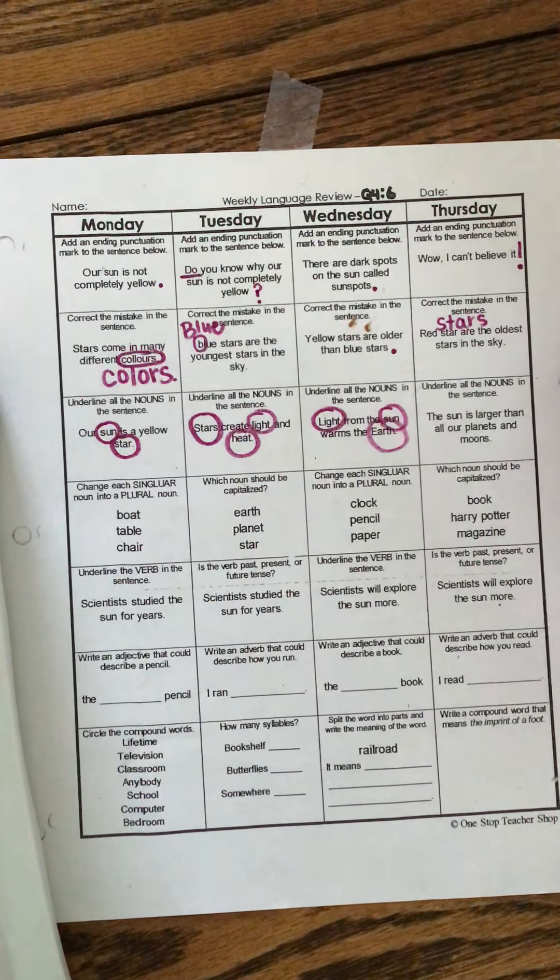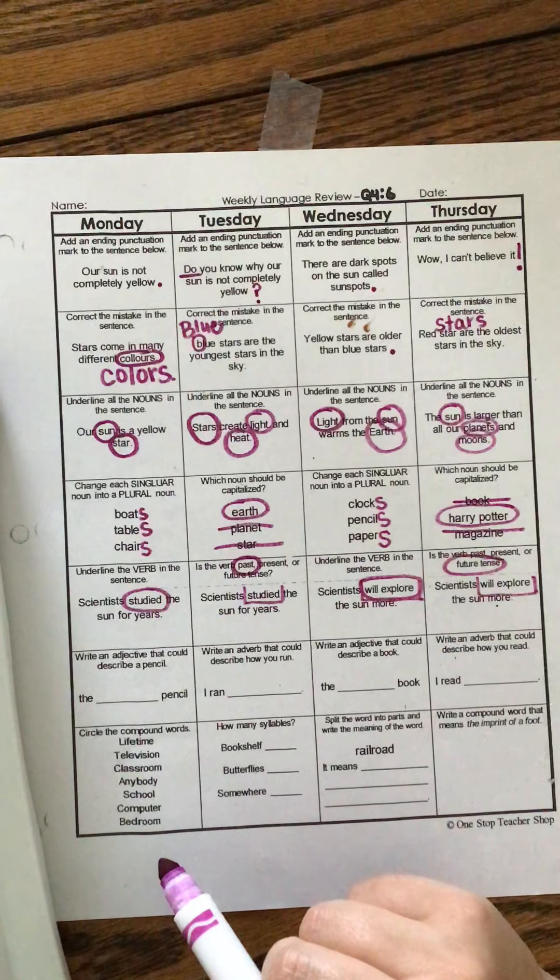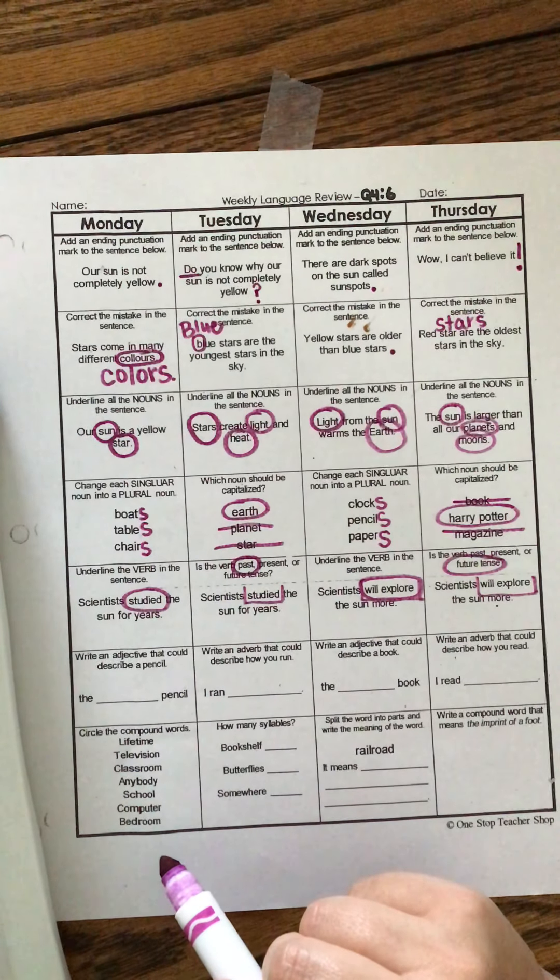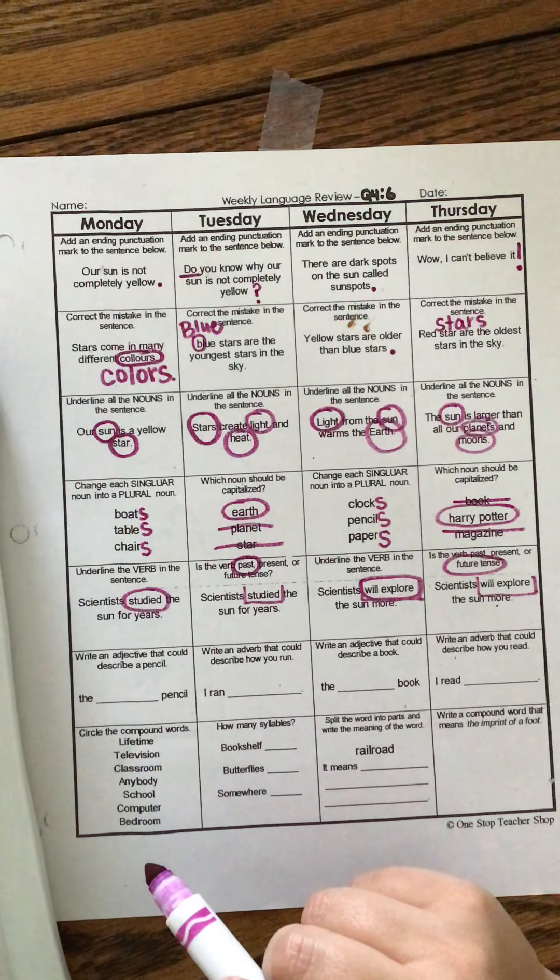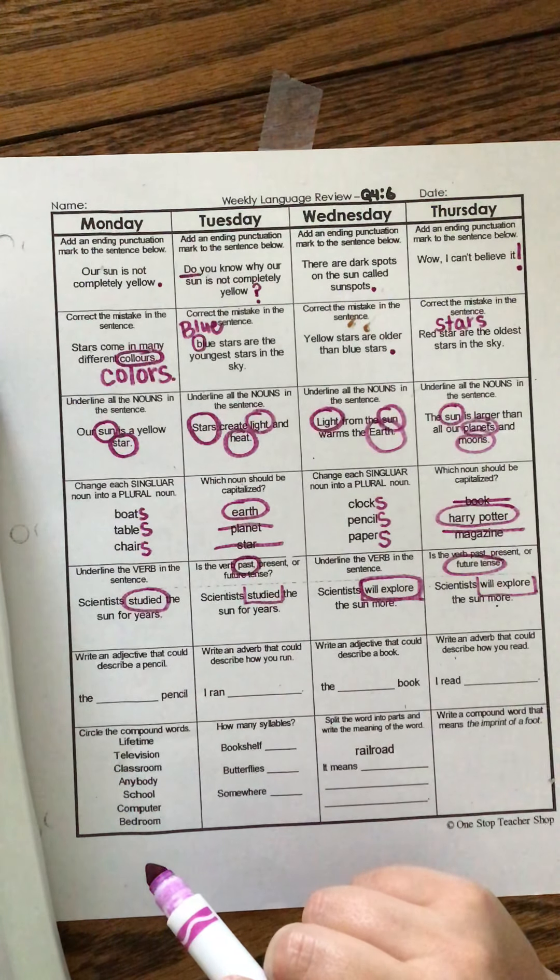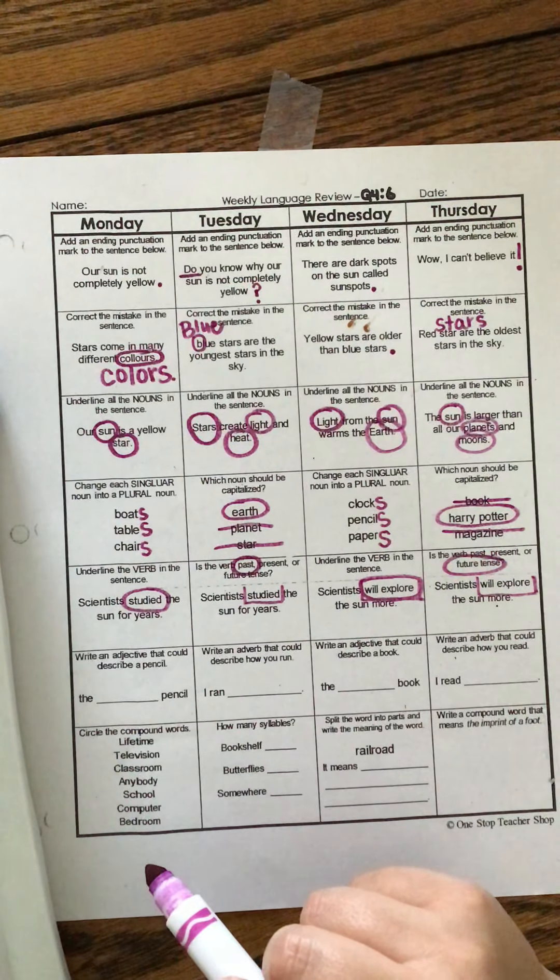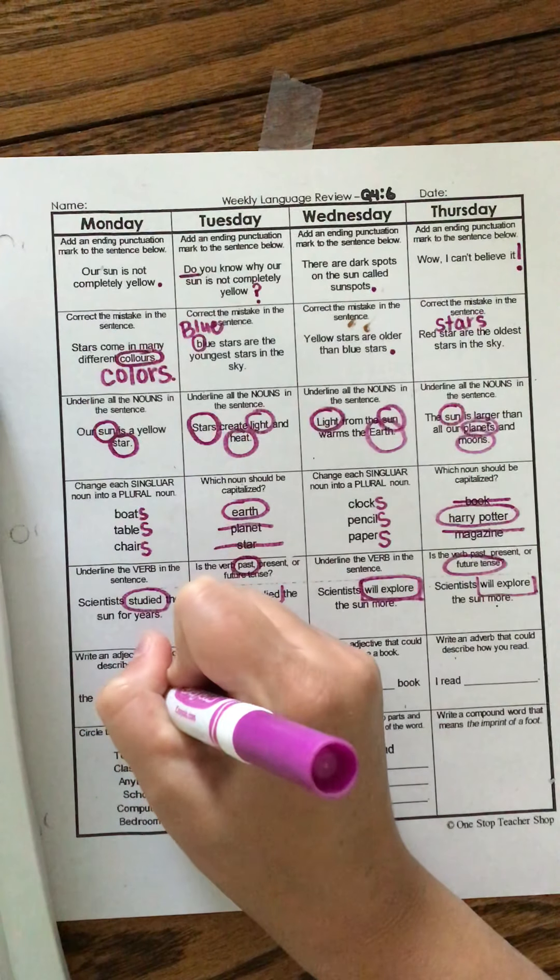Write an adjective that could describe a pencil, the blank pencil. Now remember an adjective is a word that describes a noun. So any word that you could think of that would describe pencil will be correct. You don't have to use the word that I'm going to use. So it could be the fat pencil, the skinny pencil, the yellow pencil, the lead pencil, the dull pencil, the sharp pencil, anything you want that could describe the word pencil. I'm going to do the new pencil.